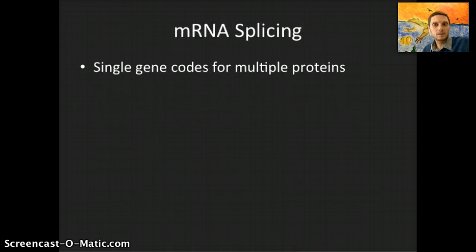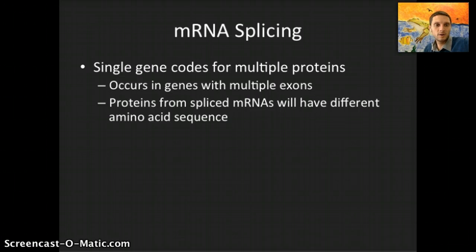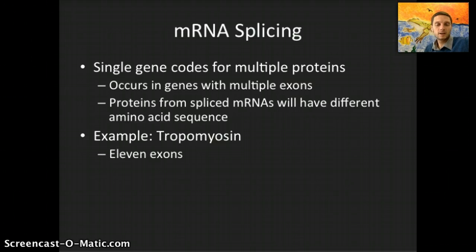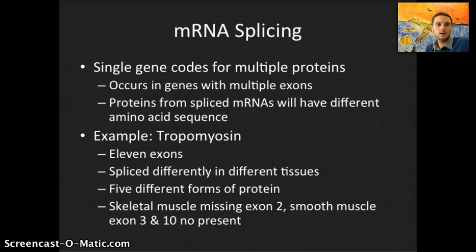Messenger RNA splicing is where a single gene codes for multiple different proteins, and it occurs in genes with multiple exons. Proteins from spliced messenger RNAs will have different amino acid sequences. An example is tropomyosin — it has 11 different exons that are spliced differently in different tissues, forming five different types of proteins. Skeletal muscle is missing exon two, smooth muscle is missing exons three and ten, and so the presence or absence of these different exons changes the type of protein formed.